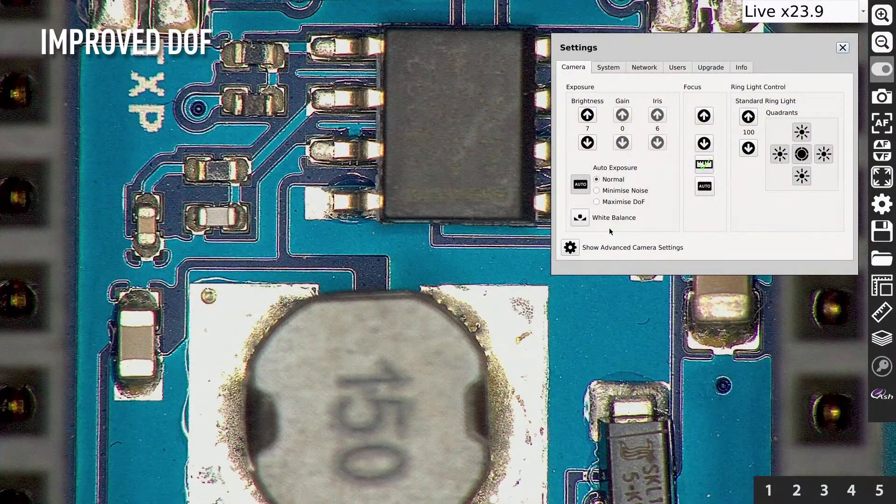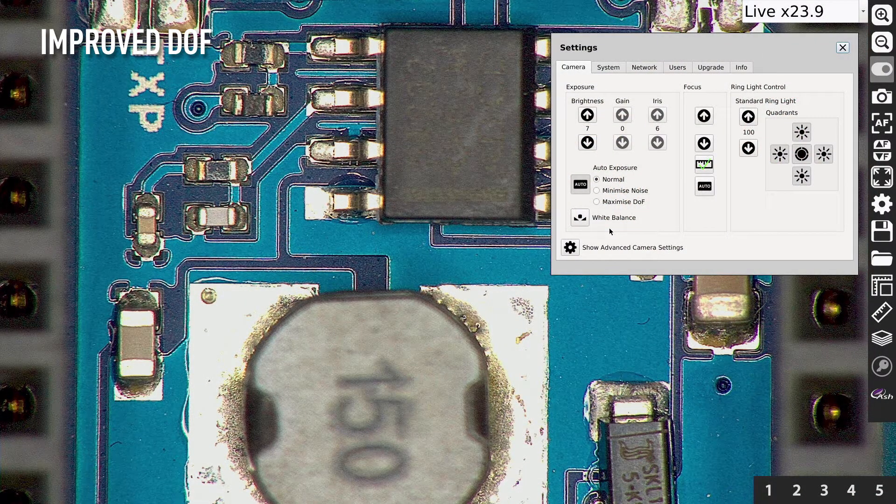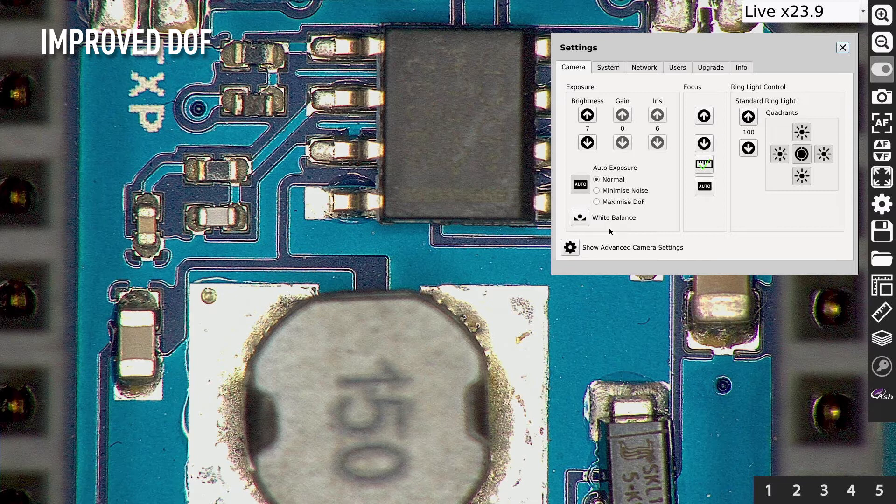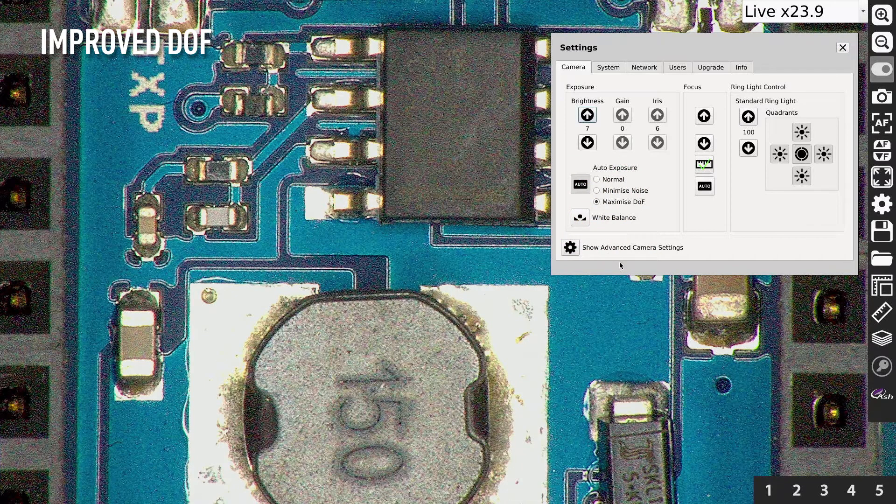The InSpecs 3 has improved depth of field, making inspecting parts much faster and more efficient, without the need for changing focus positions or adjusting camera height.